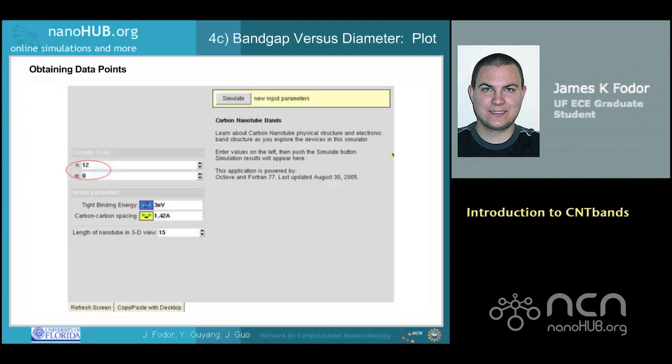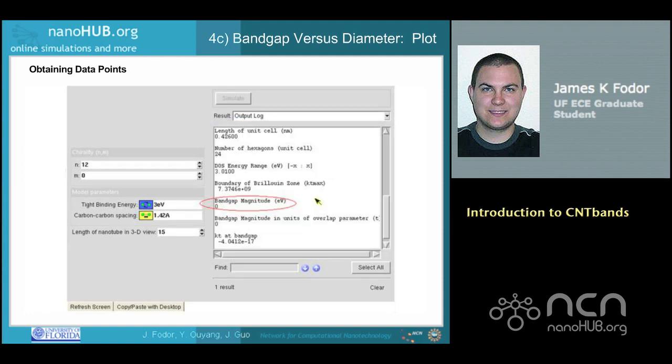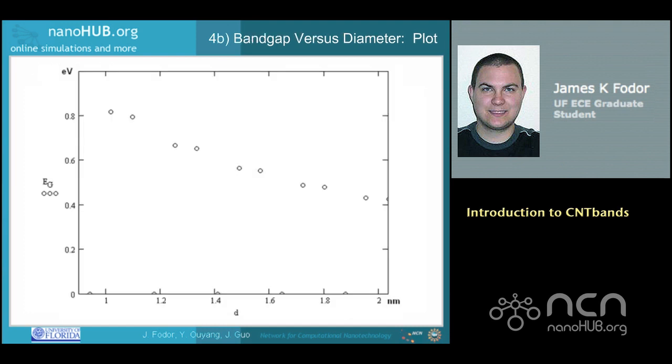To obtain the required data points, execute the following procedure for N equal to 12 through 26 in steps of 1. First, enter the current value of N, setting M to 0. Press simulate and select output log from the results drop-down menu. Record the nanotube diameter, and then scroll down to find the band gap magnitude. Plotting the data points will result in the following graph.